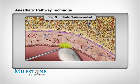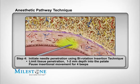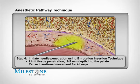Do not allow the needle to puncture the tissue at this time. Continue to allow the needle to stay on the surface for another five beeps before initiating needle penetration. Step 4: Rotate the handpiece back and forth with a slight forward movement to allow a shallow puncturing of the tissue to the depth of 1 to 2 millimeters. Then stop forward movement to allow the STA system to continue to deposit anesthetic for an additional 4 to 5 beeps before any further penetration of the tissue.